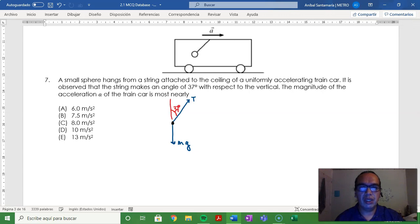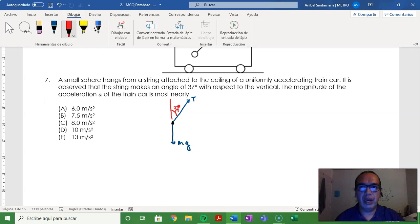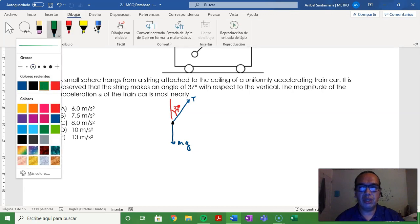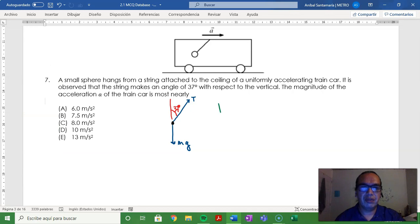This means that the y component of the tension has to cancel the gravitational force because there is no acceleration in the y direction. On the other hand, the x component of the tension has to be equal to mass times acceleration for this particular object.